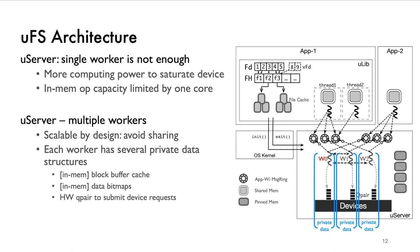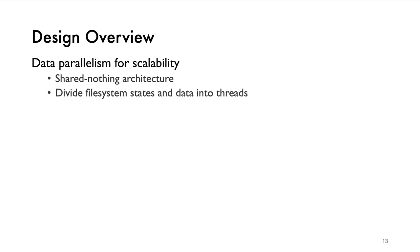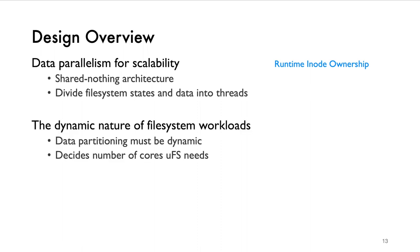With increasing demand from applications, the file system will need more CPU cores; that is, Userver needs multiple workers. Userver aims for scalable design, specifically around sharing, locking, and blocking. We carefully design data structures to be private to each worker, like the buffer cache bitmap. To avoid synchronization overhead at the server side, multiple workers will not share a message queue connected to one application. UFS addresses several key problems through its design. For the scalability goal, we adopt a shared-nothing architecture to boost data parallelism, dividing file system state and data into shards. To support this data parallelism, we introduce runtime inode ownership, and the dynamic load management provides the mechanism and policy support.